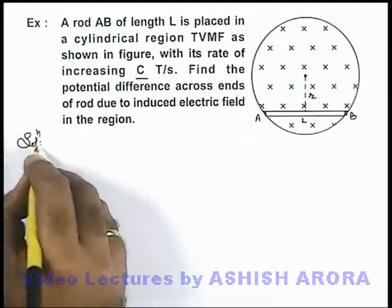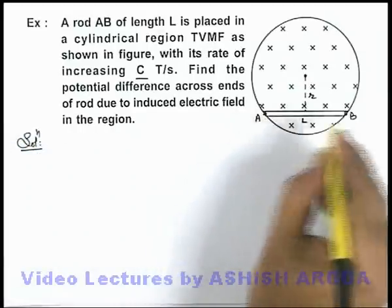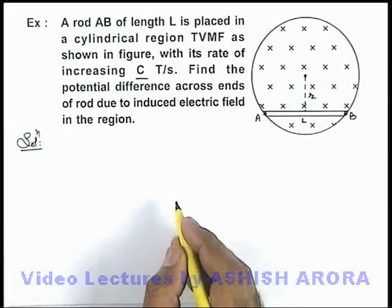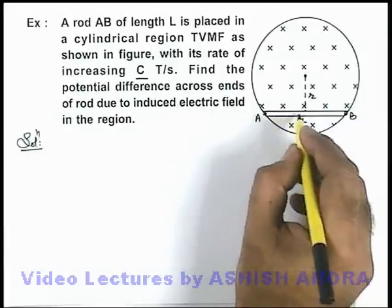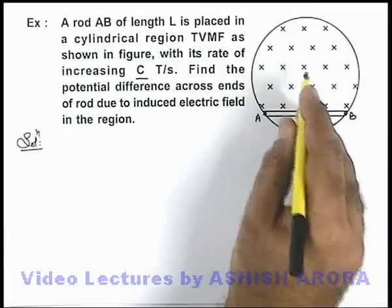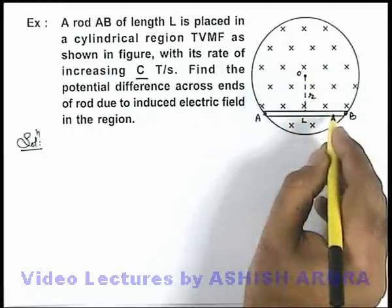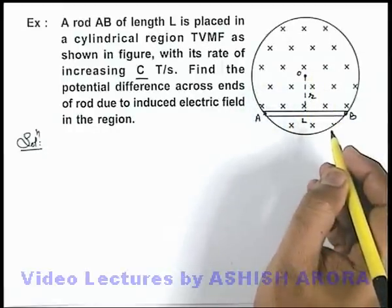If we analyze the potential difference across ends A and B, we can see at every point of the rod the distance from center of this region is different, so induced electric field will also be different.